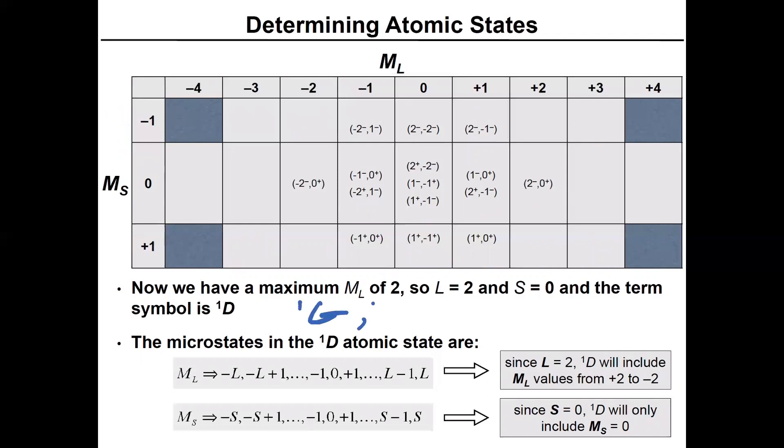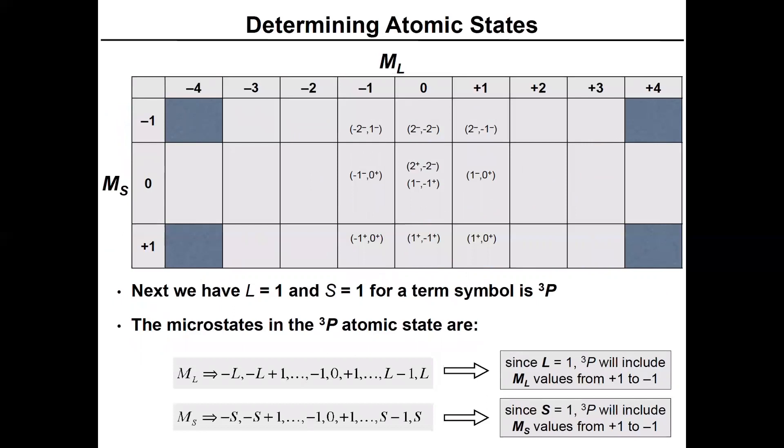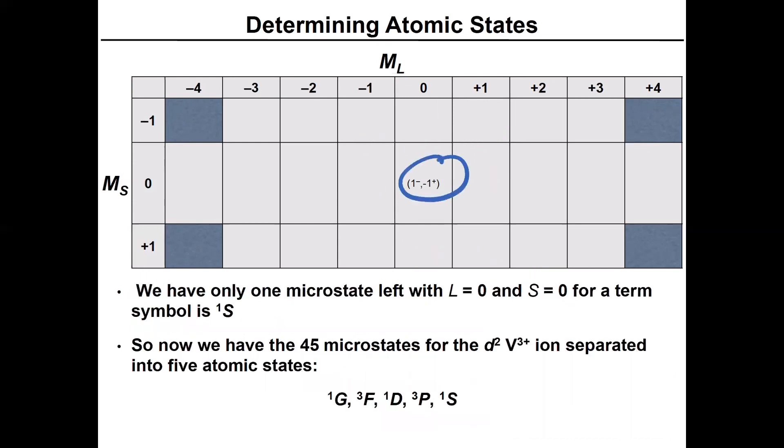We had singlet G, triplet F. And now we have two to minus two. So that's going to be a D term. There's only the possibility for singlet. So that's a singlet D. Then we remove five more microstates from the middle row. Then we're down to L equals one. This is going to be for a triplet P, let's remove them. And then what are we left with? Effectively a singlet S.